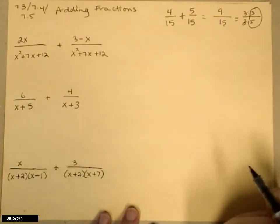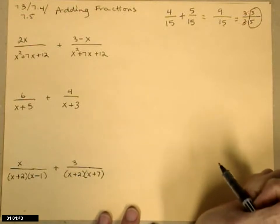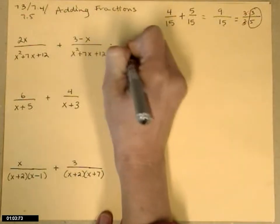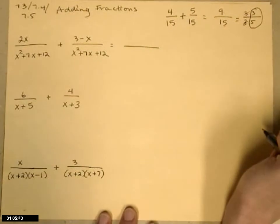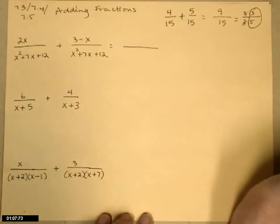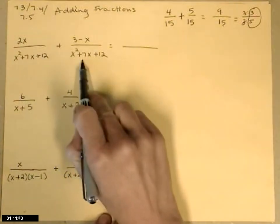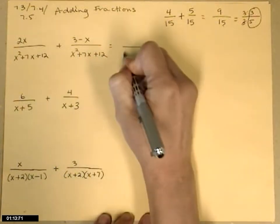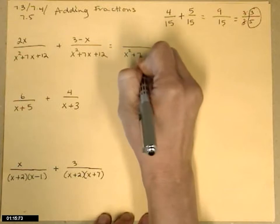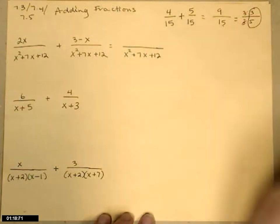Now we move on to rational expressions. That's where we have polynomials in the numerator and/or denominator. Again, we need a common denominator. In the first example, I have the common denominator: x squared plus 7x plus 12 in both, so that will be the denominator when I add them together.